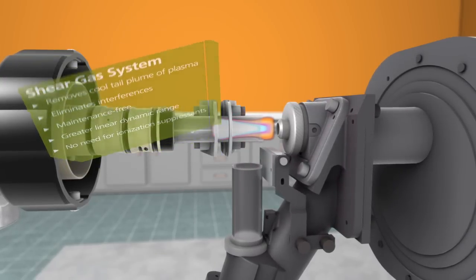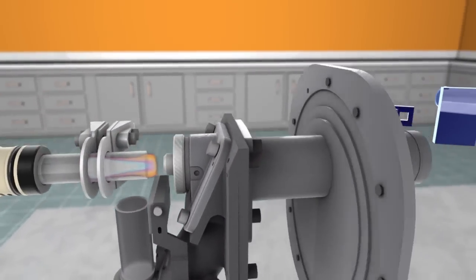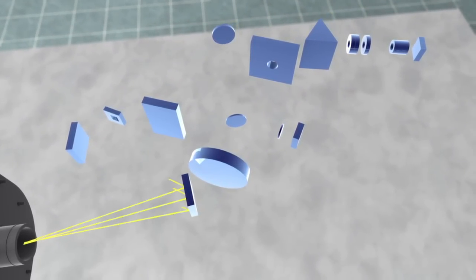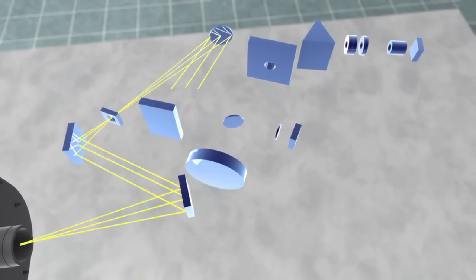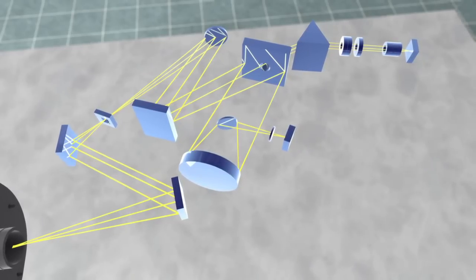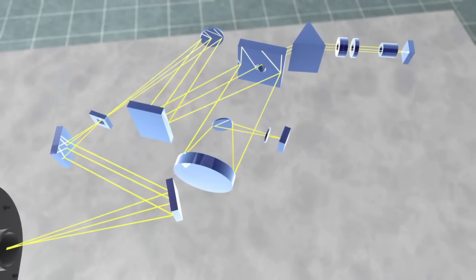Of course, the heart of any ICP-OES is its optical system. Precision engineered for enhanced light throughput and superior detection limits, the advanced optical system on the Optima 8000 series makes it easy to comply with regulations in virtually any industry.